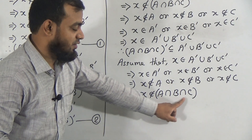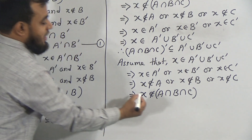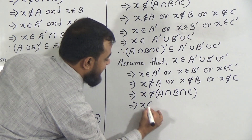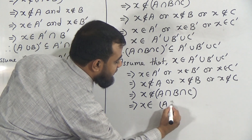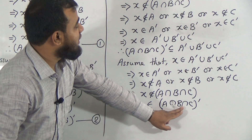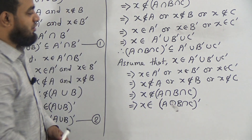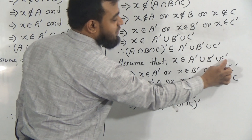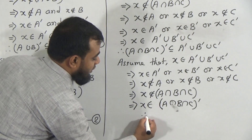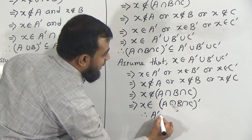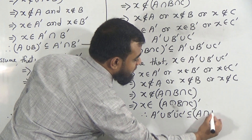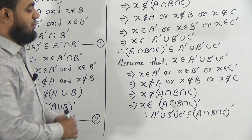Since x does not belong to this set, x must belong to this set's complement: x belongs to A intersection B intersection C whole prime. We assumed x belongs to A prime union B prime union C prime and proved x belongs to A intersection B intersection C whole prime. Therefore, A prime union B prime union C prime is a subset of A intersection B intersection C whole prime. This is equation number two.